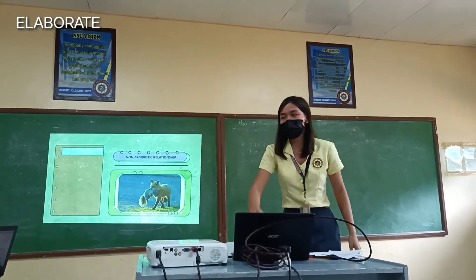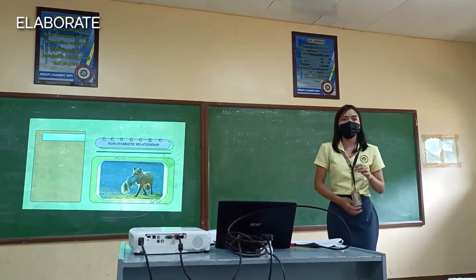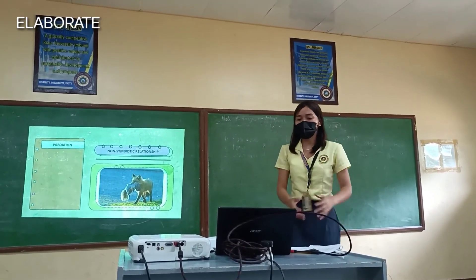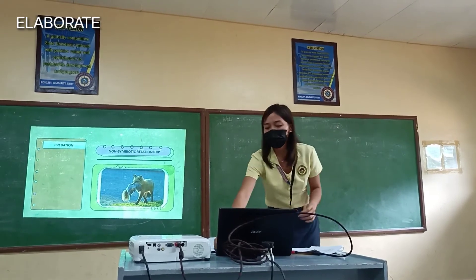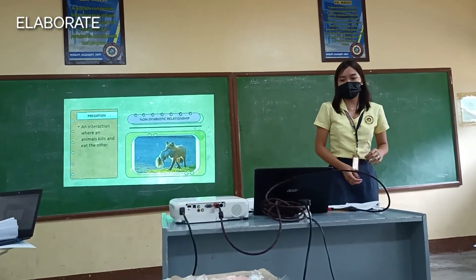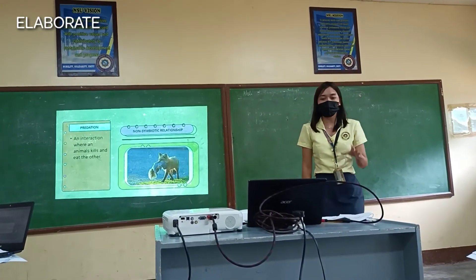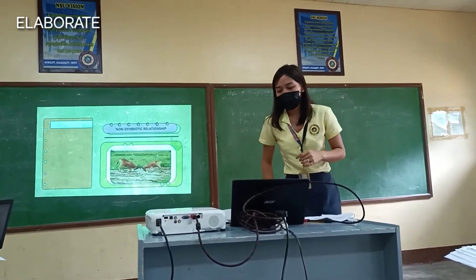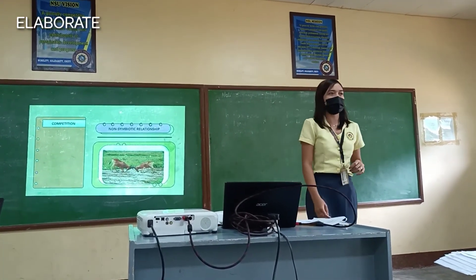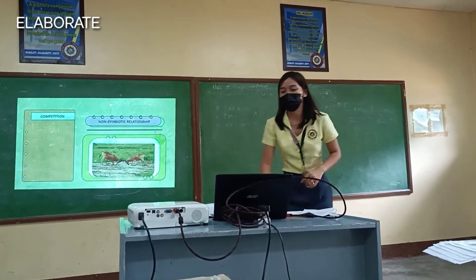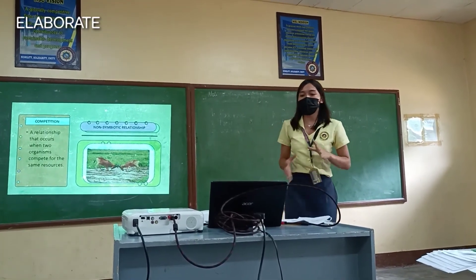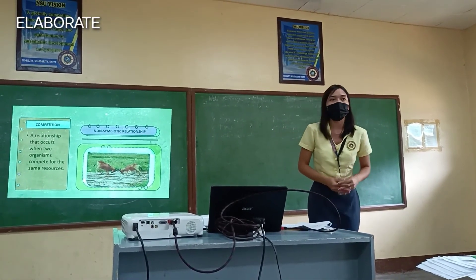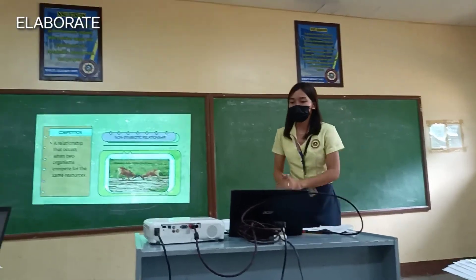Now let's move on to the non-symbiotic relationship. We have predation, which is an interaction where an animal kills and eats another. The second type of non-symbiotic relationship is competition — a relationship that occurs when two organisms compete for the same resources.